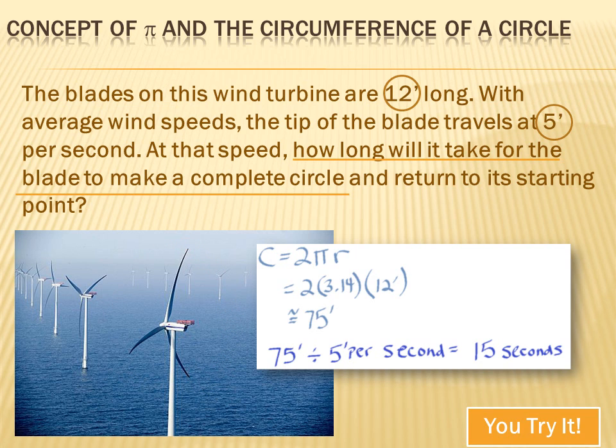Now, I'm not a very good drawer, but that looks like a circle to me. And the circumference of the circle is the distance that that tip of the blade has to travel to get all the way around the circle. So if we knew the circumference of that circle, then knowing the speed that the tip of the blade was traveling, we could figure out how long will it take for the blade to make a complete circle. We also know the radius of the circle because the radius is the length of that blade.